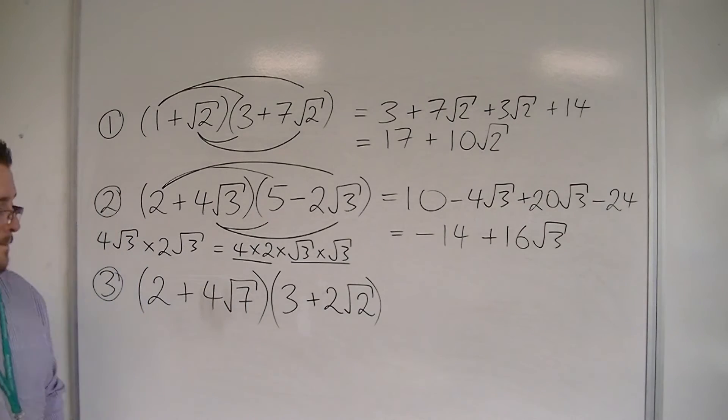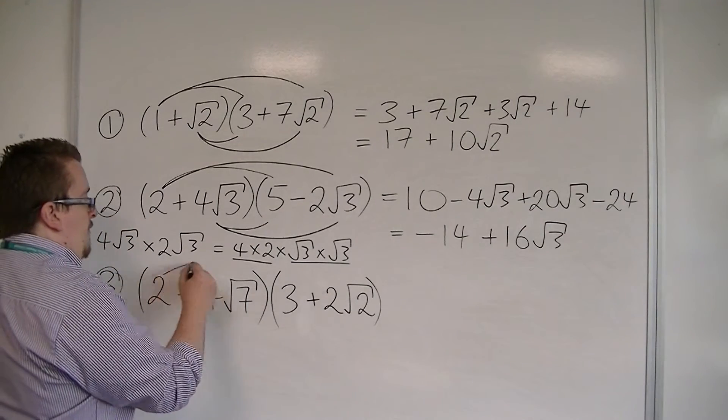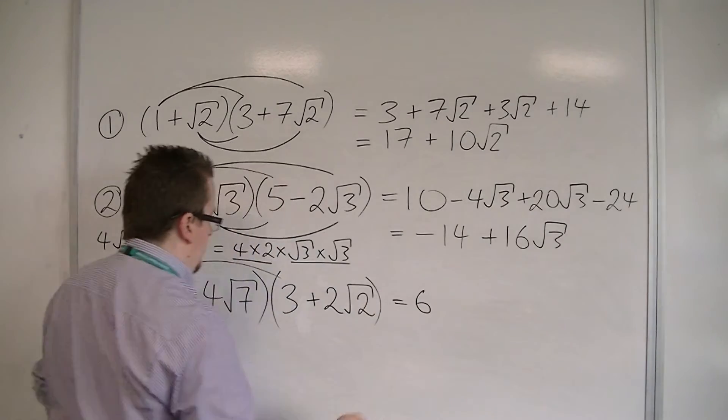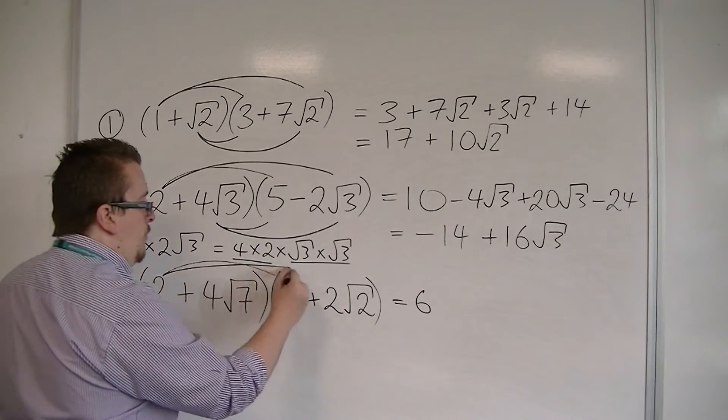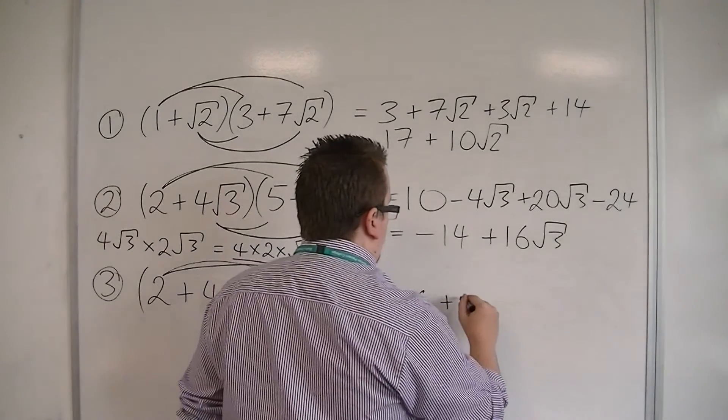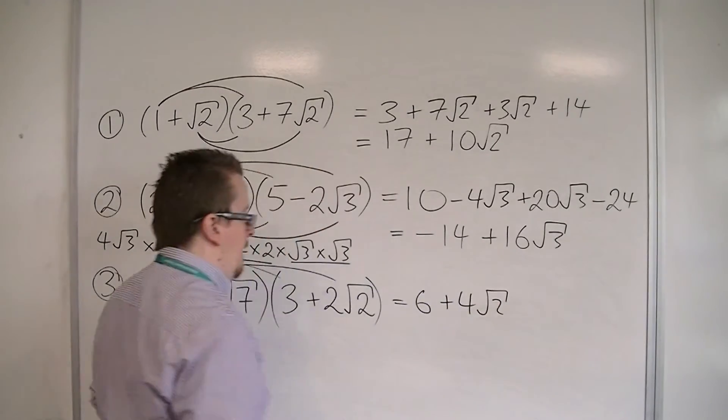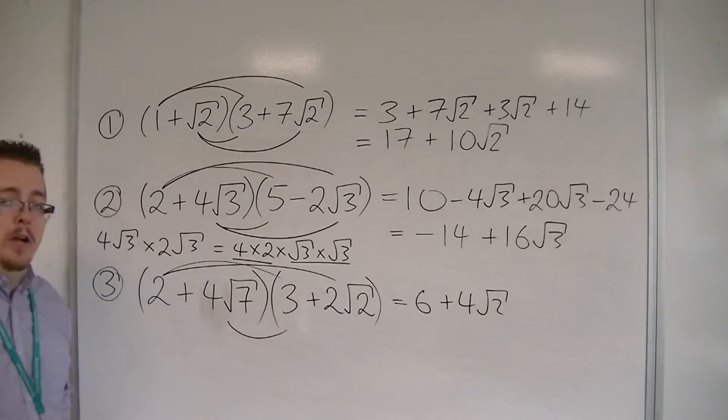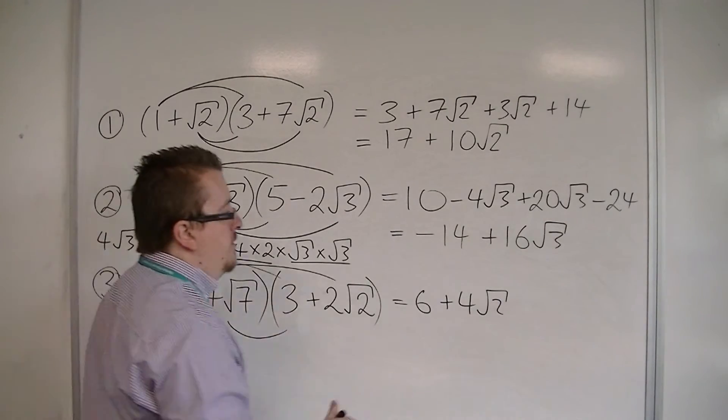Then we've got the last one. First of all, we've got 2 times 3, so that makes 6. We've then got 2 lots of 2√2, which is 4√2. I've then got 4√7 times 3, which will be 12√7.